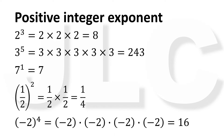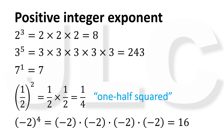equals 16. The exponent tells how many copies of the base are to be multiplied together. When the exponent is 2, it is said to be squared, so 1 half raised to 2 is also pronounced as 1 half squared. When the exponent is 3, it is said to be cubed, so 2 raised to 3 is also pronounced as 2 cubed.